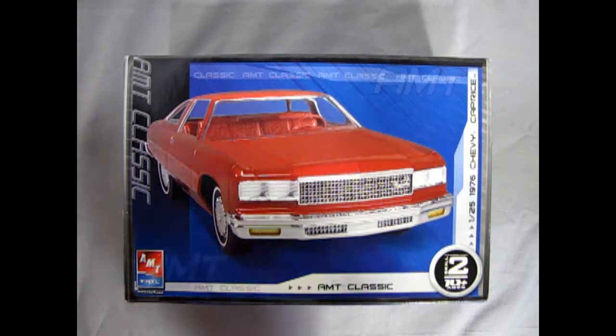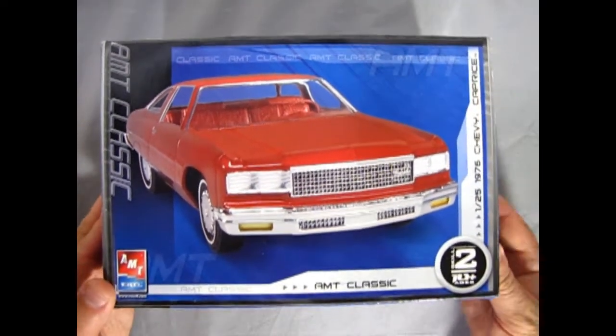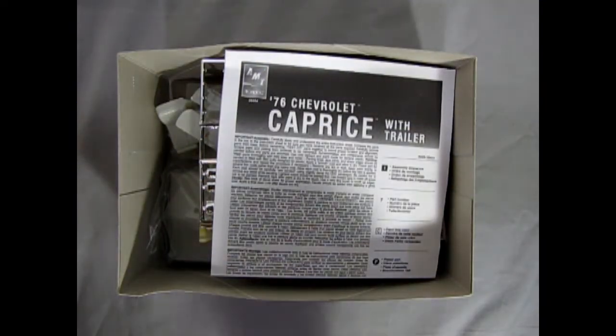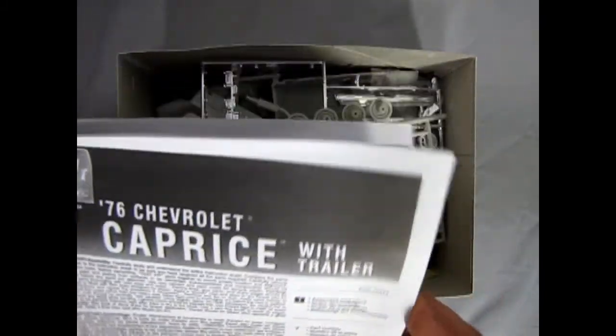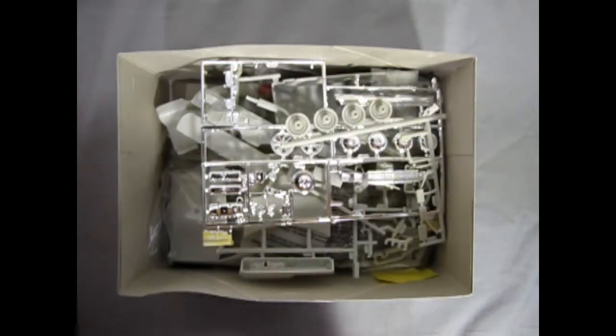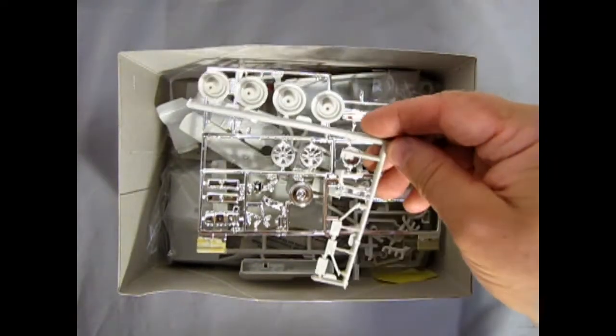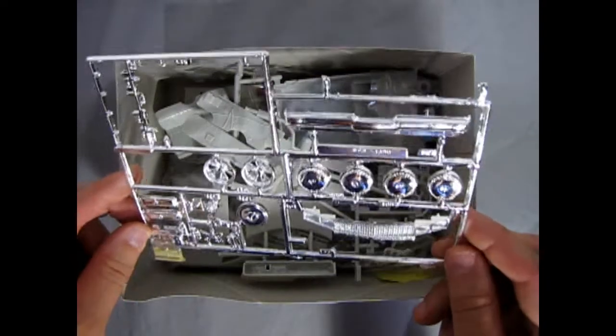And now we can take the lid off this 1976 Chevy behemoth and see inside. And again we've got the nice instruction sheet, Chevy Caprice with trailer. Now there may be some decals somewhere in here, I'm not too sure, but there's the beginning of our gray plastic components. I do believe James had a look at this one. There's our chrome there.